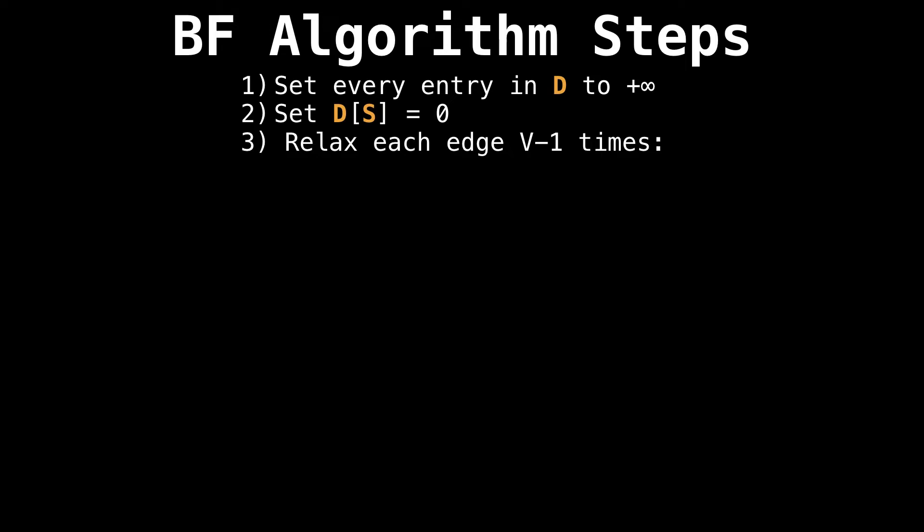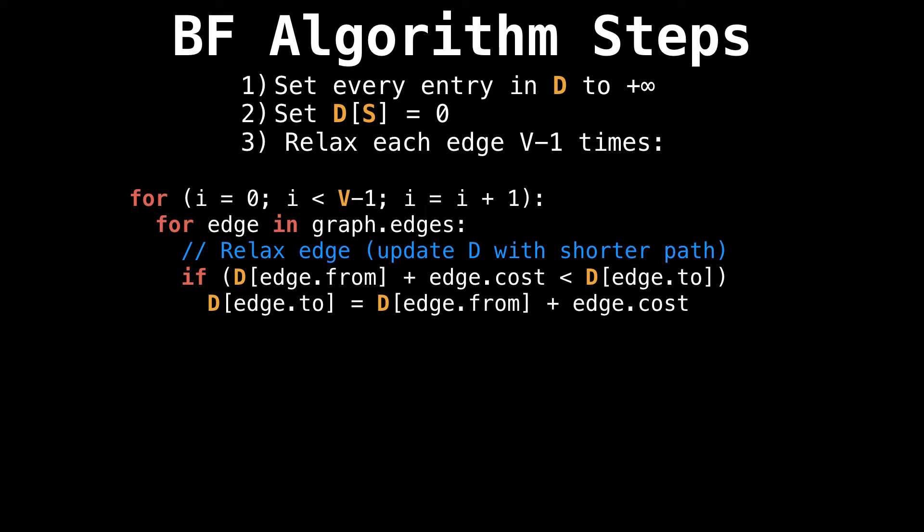The last part of the algorithm is to relax each edge V minus 1 times. Relaxing an edge simply means taking an edge and trying to update the value from where the edge starts to where it ends. In terms of code, this is all we need to do. We loop V minus 1 times, then for each edge, we relax the edge. In the relaxing step, what we do is look at the value of where the edge starts, add the edge cost, and see if that's better than where we're trying to go. And if so, update with the shorter path value.